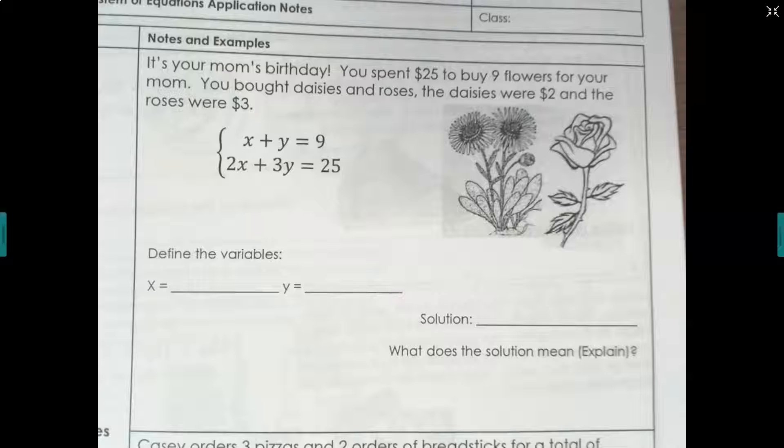Here's our first example. It's your mom's birthday and you spent $25 to buy nine flowers for your mom. You bought daisies and roses. The daisies were $2 each and the roses were $3 each. Now I've given you the system here, so let's just take a second to take a look at this.